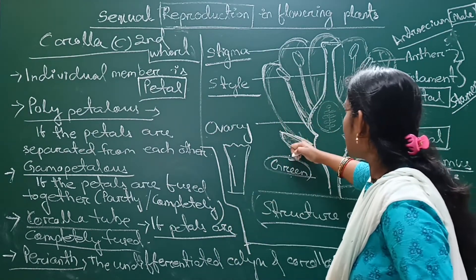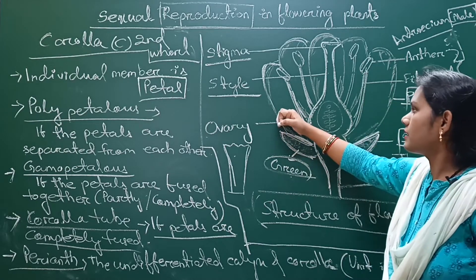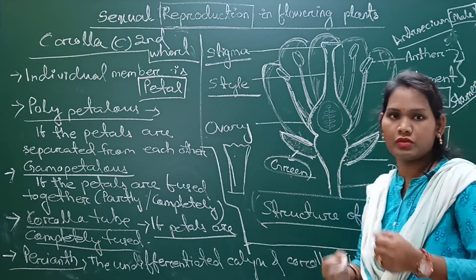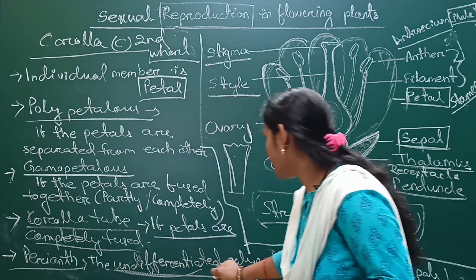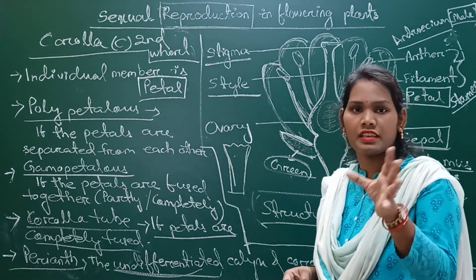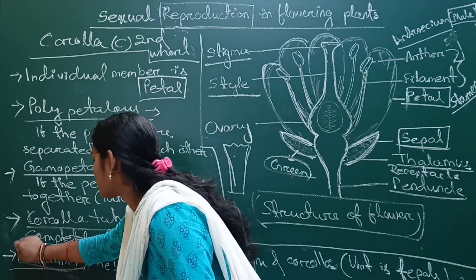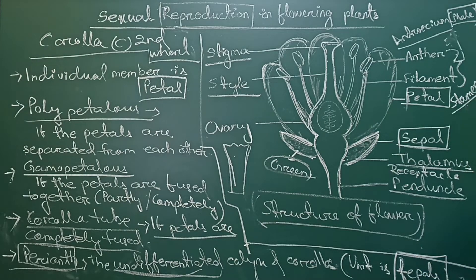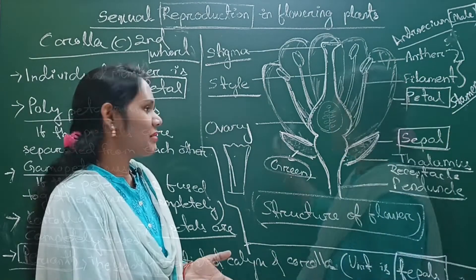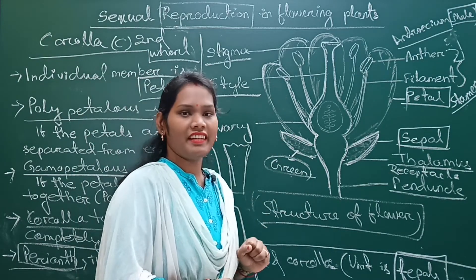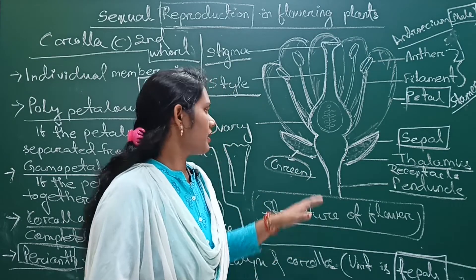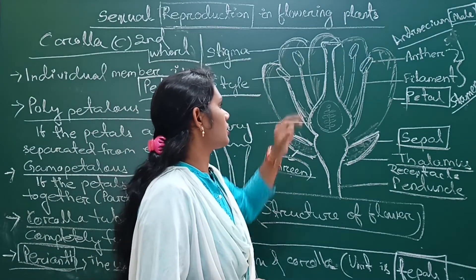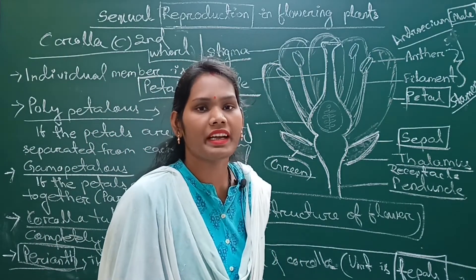If petals and sepals are fused and undifferentiated from each other, they form a structure called the perianth, whose single unit is called a tepal. If the tepals are green in color, we call them sepaloid tepals. If the tepals are colored like petals, we call them petaloid tepals.